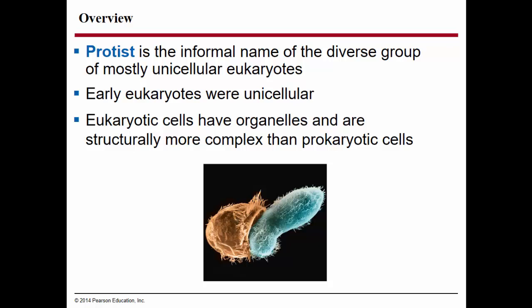The earliest eukaryotes were unicellular, and many unicellular eukaryotes exist today. Eukaryotes are different from prokaryotes because they have DNA contained in a nucleus, membrane-bound organelles, and their cellular structure is much more complex than the structure of prokaryotic cells.